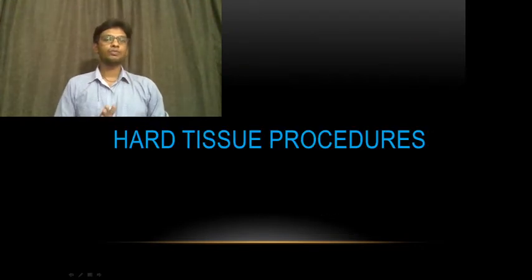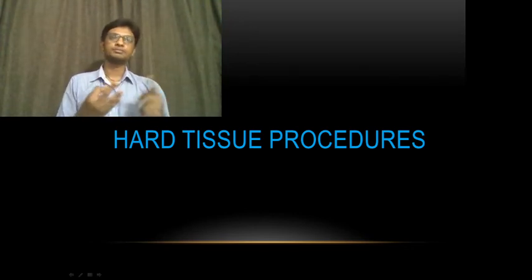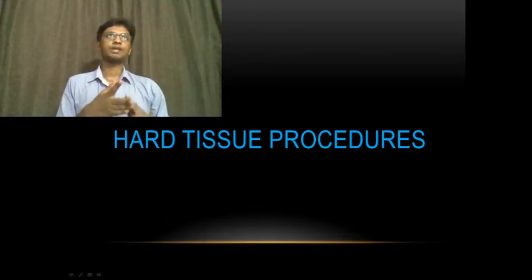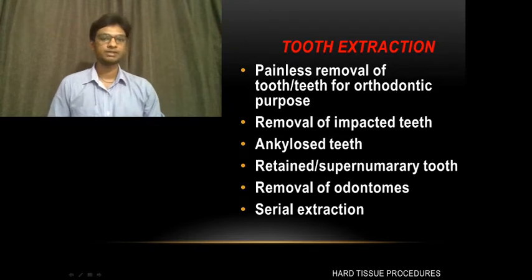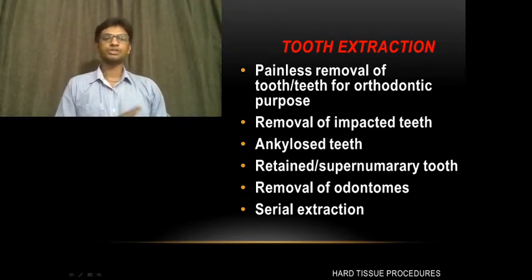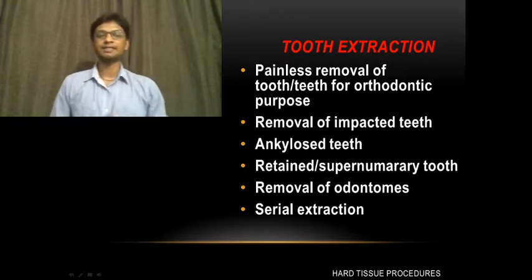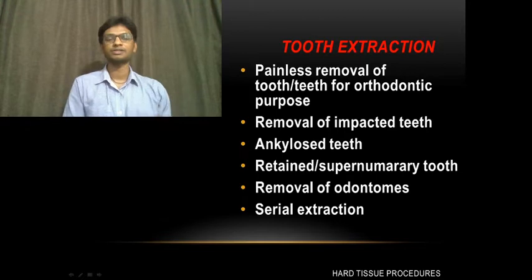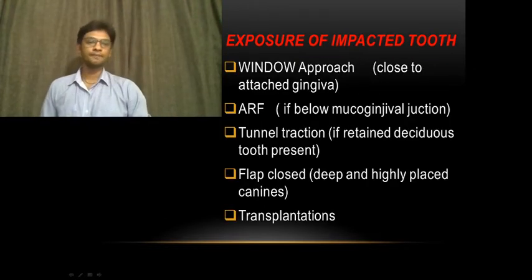Next are the hard tissue procedures. The first is extraction. Exodontia is the painless removal of a tooth or teeth. We do extraction for almost all major proclination corrections and crowding corrections to gain space. This also includes removal of impacted teeth, ankylosed teeth, retained supernumerary teeth, odontomes, and serial extraction.